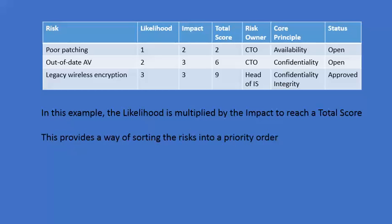By doing that you're able to prioritize your risks. We can see here that poor patching has a likelihood of only one and an impact rating of two, so one times two is two — the total score for this risk is two. Out-of-date antivirus software has a likelihood of two and an impact of three, so two times three is six. And legacy wireless encryption has a likelihood of three and an impact of three, so three times three is nine. So we now have an idea of the order in which we should tackle these three risks, with legacy wireless encryption having the highest priority, followed by out-of-date antivirus software, and finally poor patching.